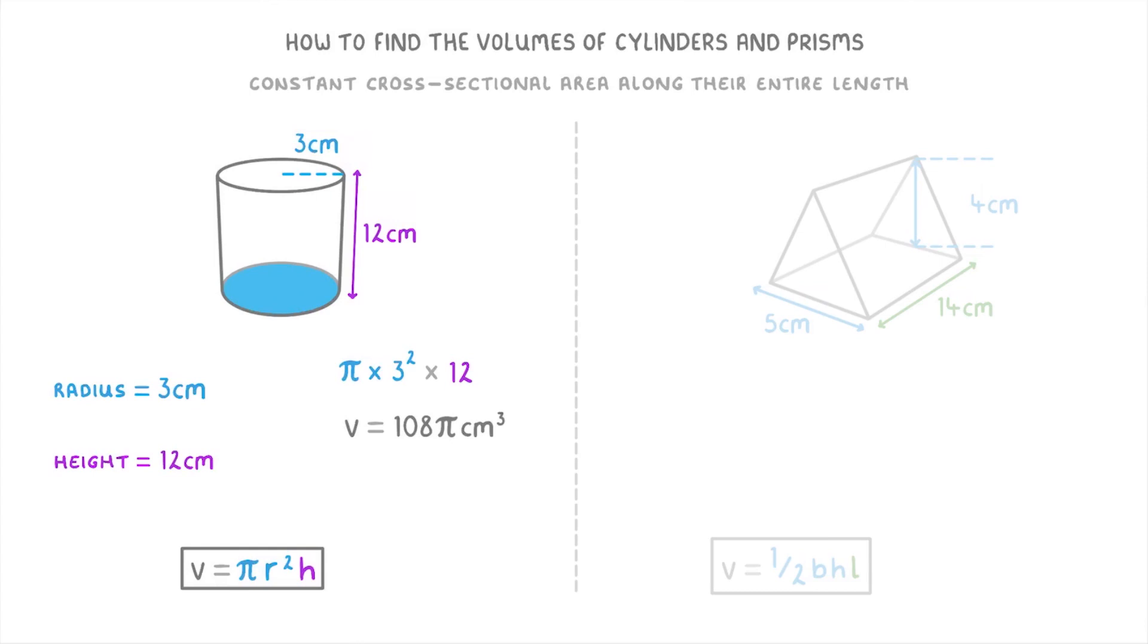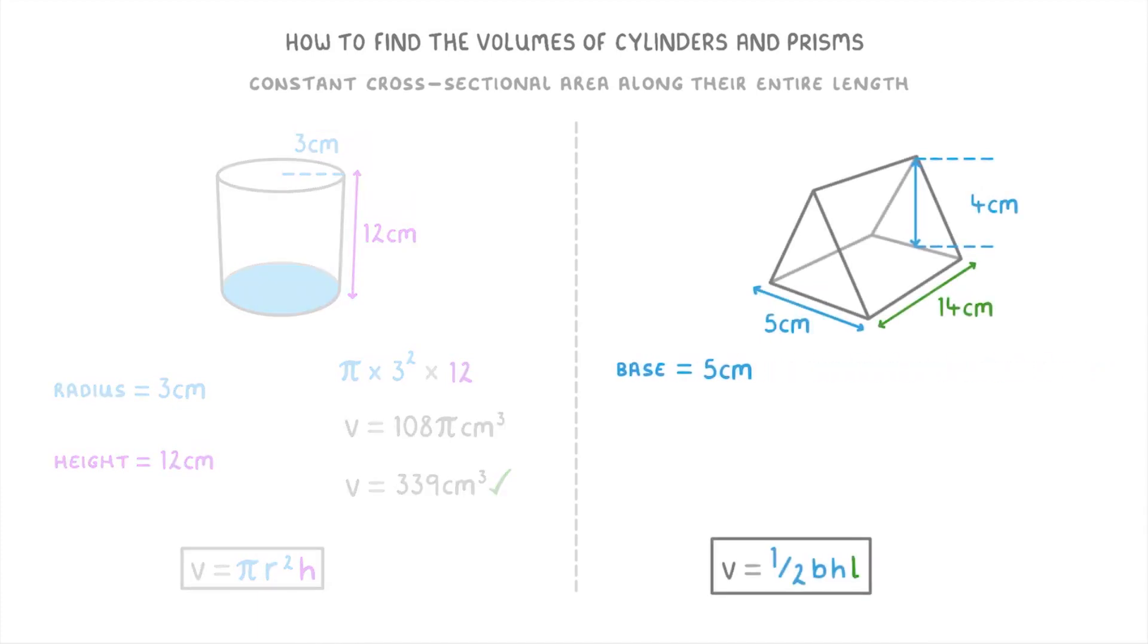Or if we have a triangular prism, we can see that it has a base of 5cm, a vertical height of 4cm, and a length of 14cm. So to work out the cross-sectional area of the triangle, we'd start by doing 1 half times the base of 5 times the height of 4. And then we'd multiply that by the length of 14cm. Which gives us a total volume of 140cm cubed.